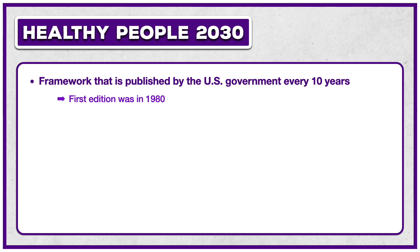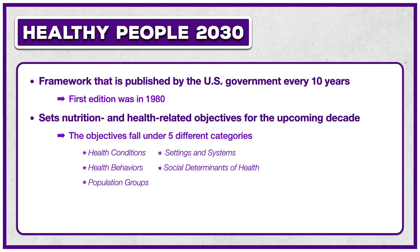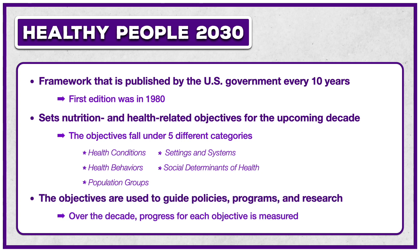Healthy People sets nutrition and health-related objectives for the upcoming decade. In Healthy People 2030, the objectives fall under five categories: health conditions, health behaviors, population groups, settings and systems, and social determinants of health. The objectives are used to guide policies, programs, and research. Over the decade, progress for each objective is measured.